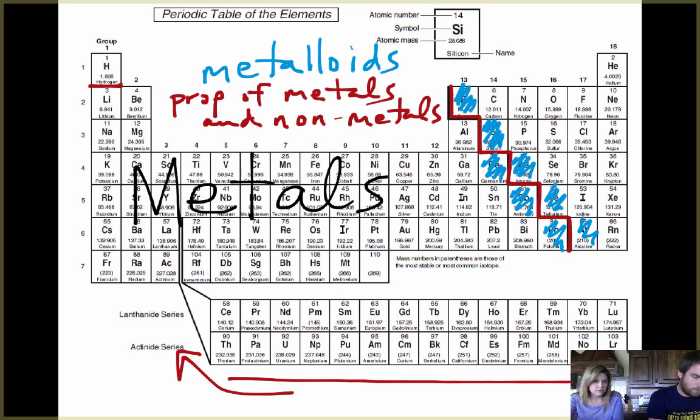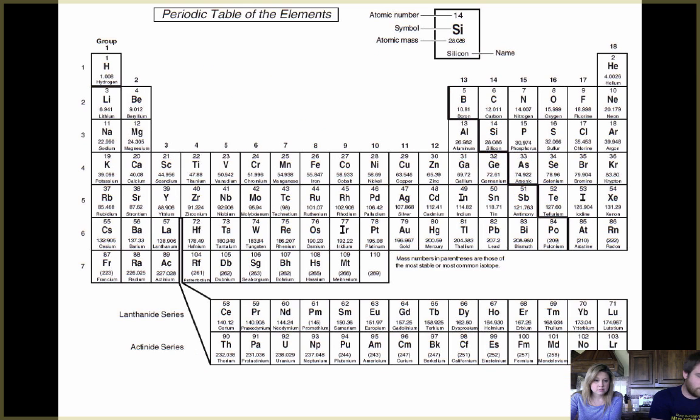So everything to left except for hydrogen. Yeah, and hydrogen by the way, hydrogen is not a metalloid. No, okay. So we'll say except for hydrogen and aluminum. Those are not metalloids but everything to the left here is a metal. And aluminum, think of aluminum foil, aluminum is a metal.